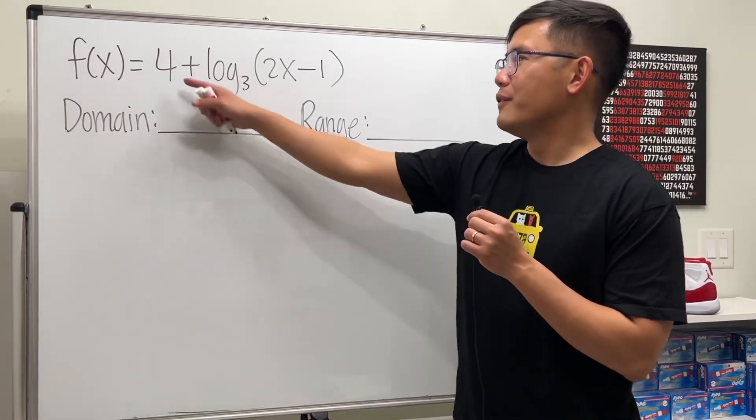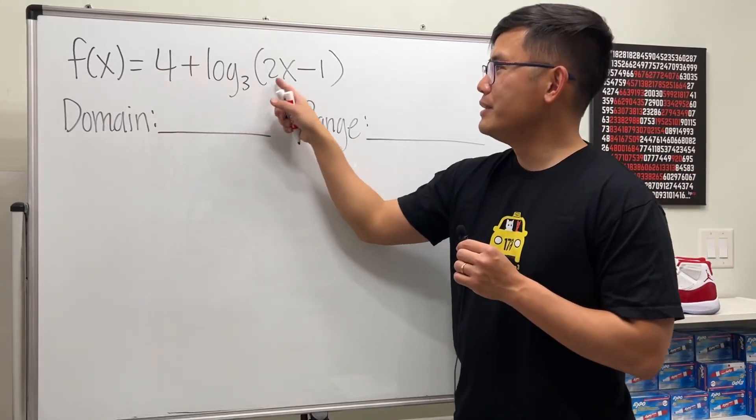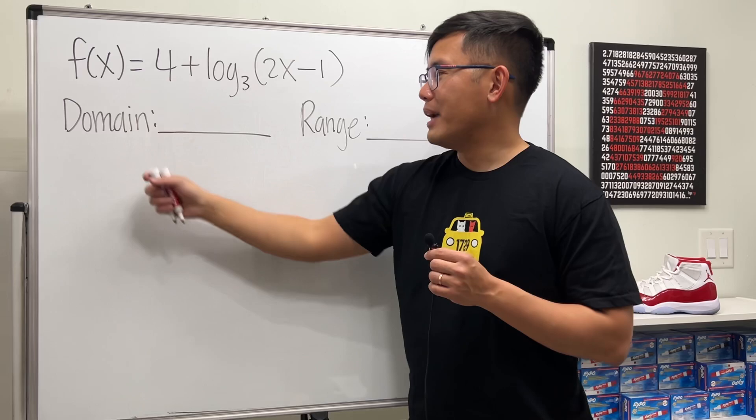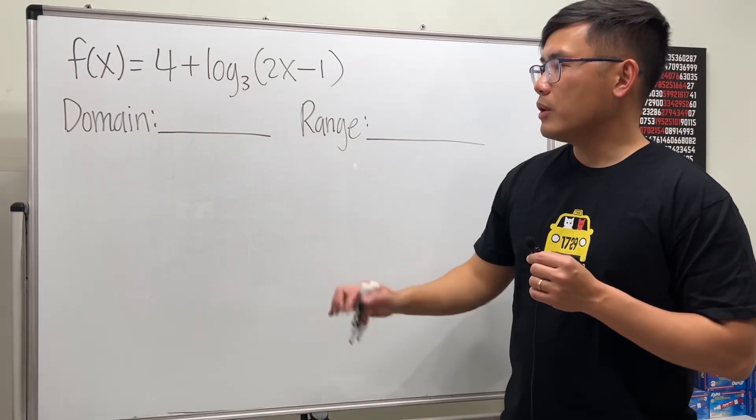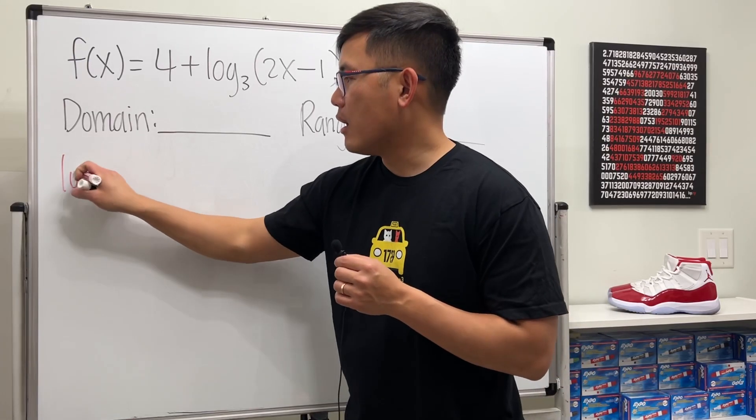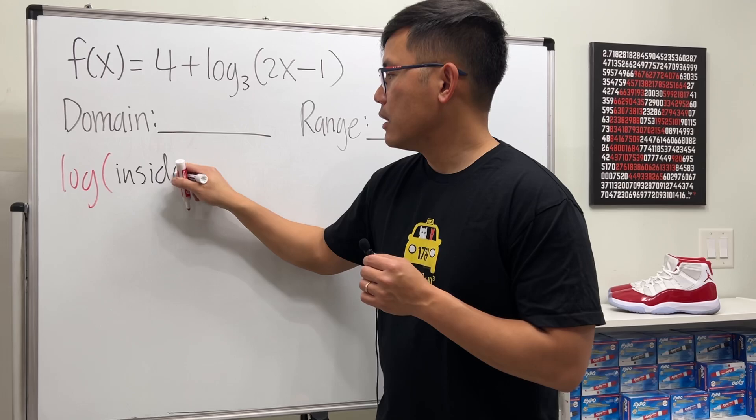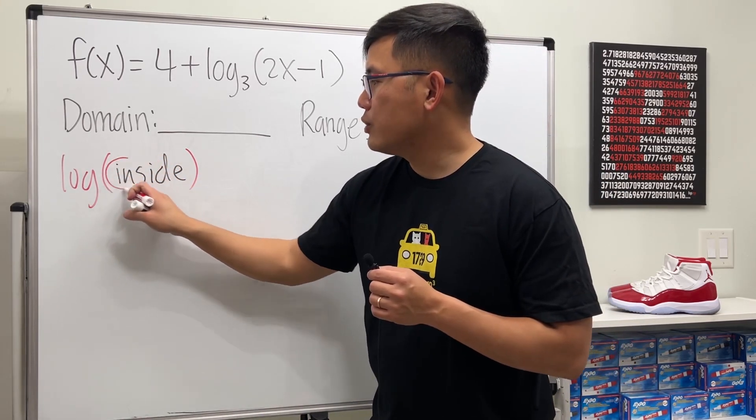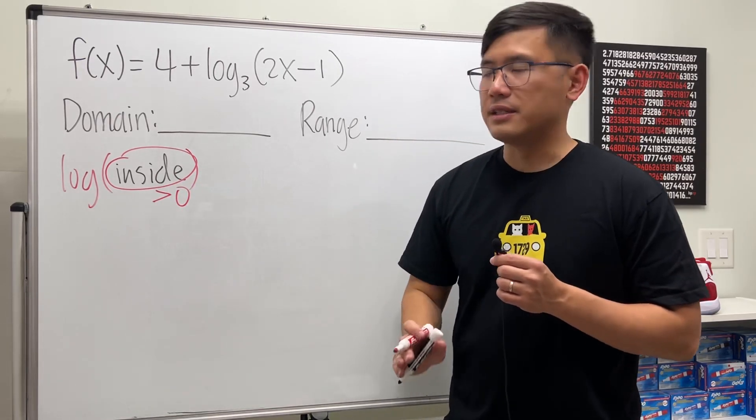Here we have a function f(x) = 4 + log base 3 of (2x - 1). Our goal is to find the domain and range of this function. For the domain, remember whenever we have a log of whatever inside, the restriction is that we have to make sure the inside is greater than zero.